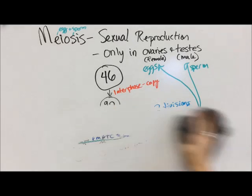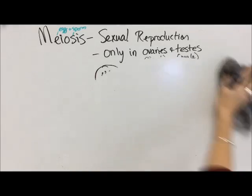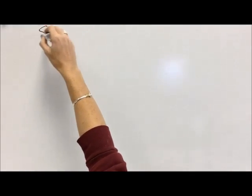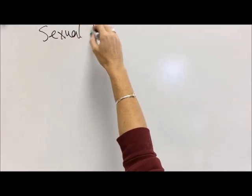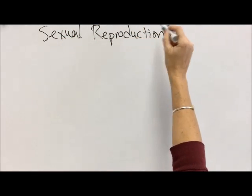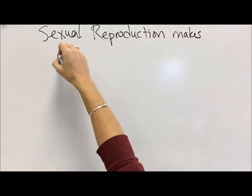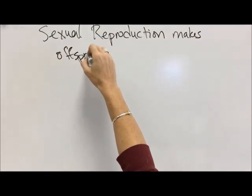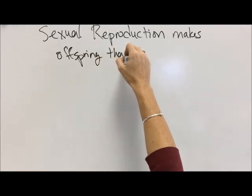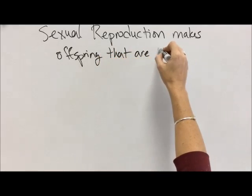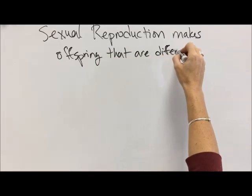Interestingly, in females this only happens before we're born, because females are born with all the eggs that we're going to have. Males make like a million sperm a day — that's a lot of sperm. So once guys hit puberty, they're just making sperm all day, every day. It's amazing they can get anything else done, really.